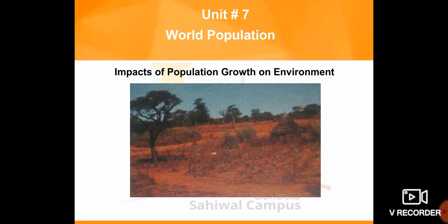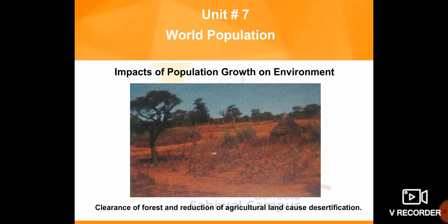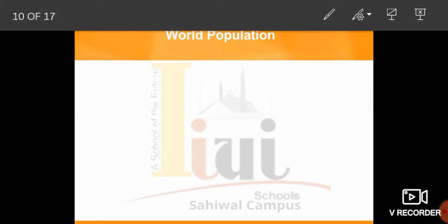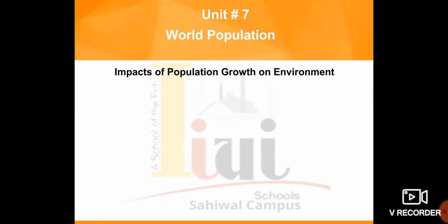The third picture shows deforestation. Clearance of forest and reduction of agricultural land cause desertification. These are important impacts of population growth on the environment.